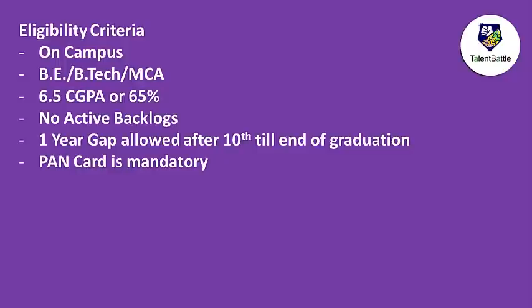First, let us understand the eligibility criteria. Most importantly, this is an on-campus opportunity only for students of selected colleges who are eligible for Accenture. The registration or application link will be provided to you by your training and placement officer or by Accenture directly on your email. This is an on-campus opportunity — remember that.